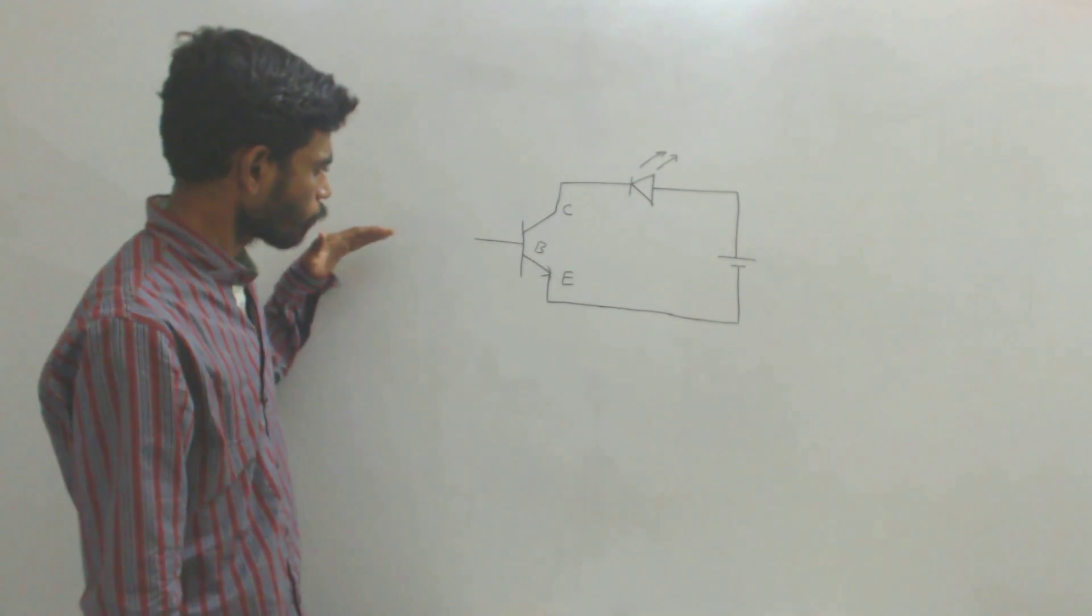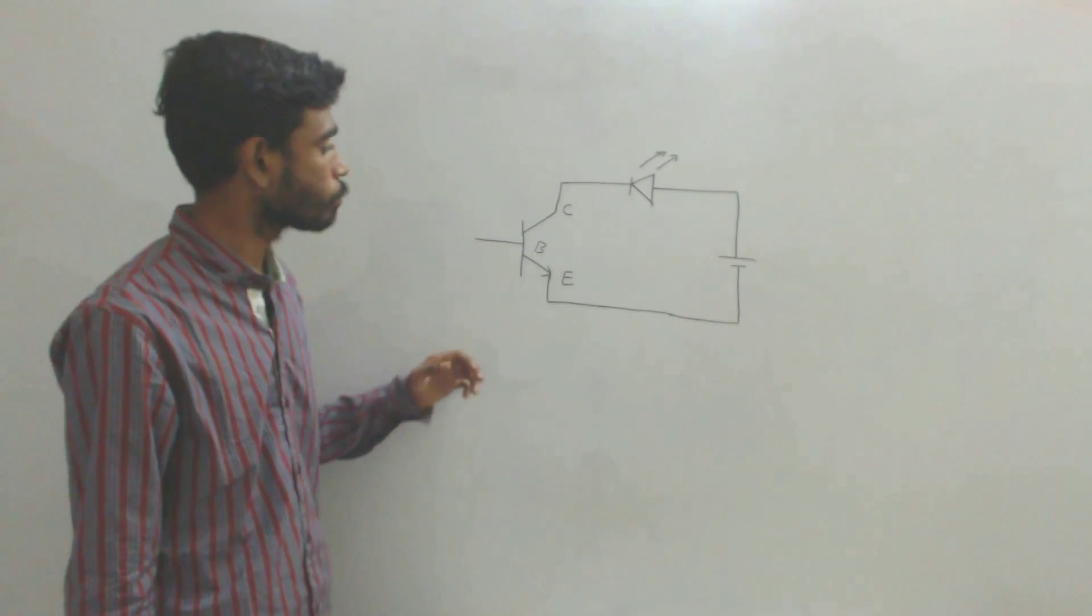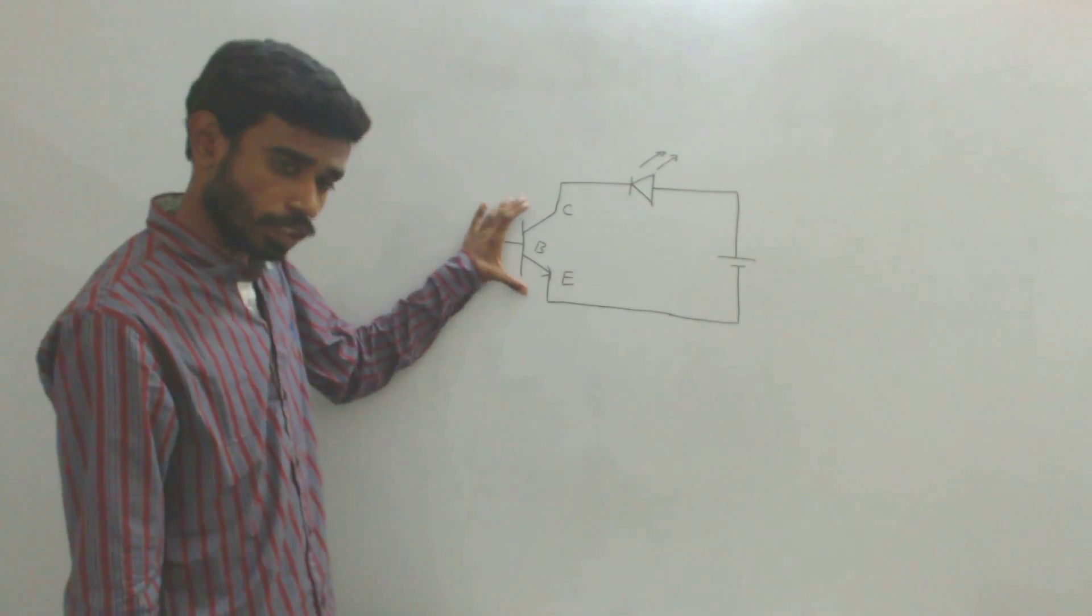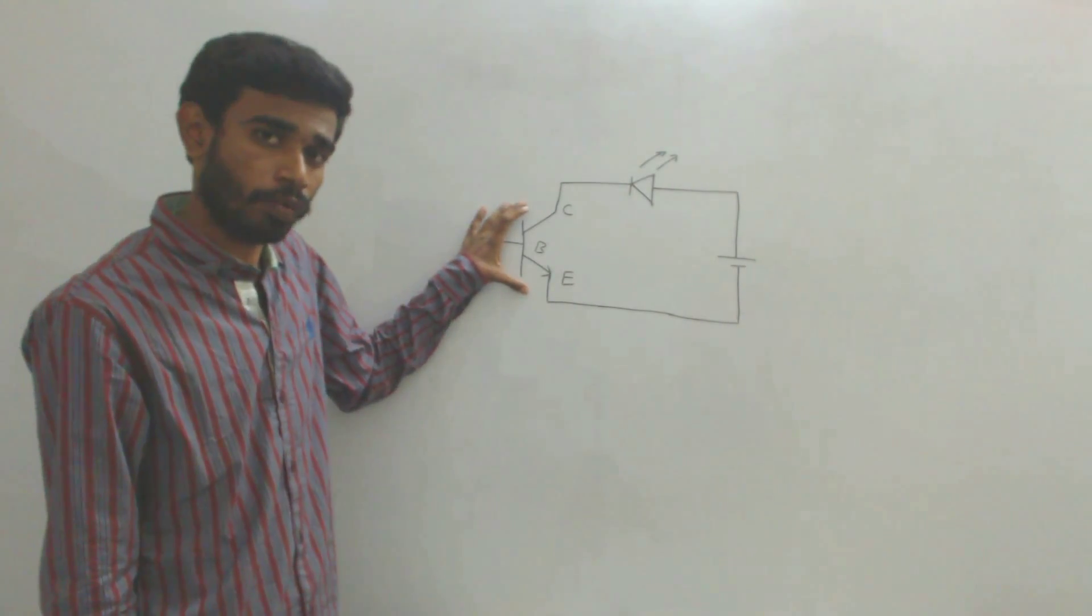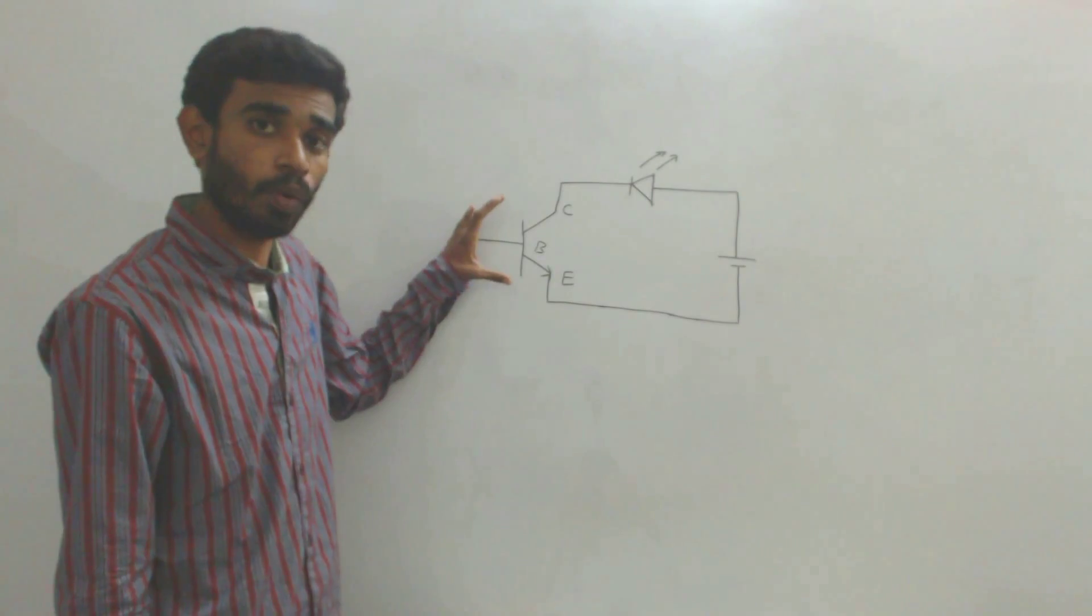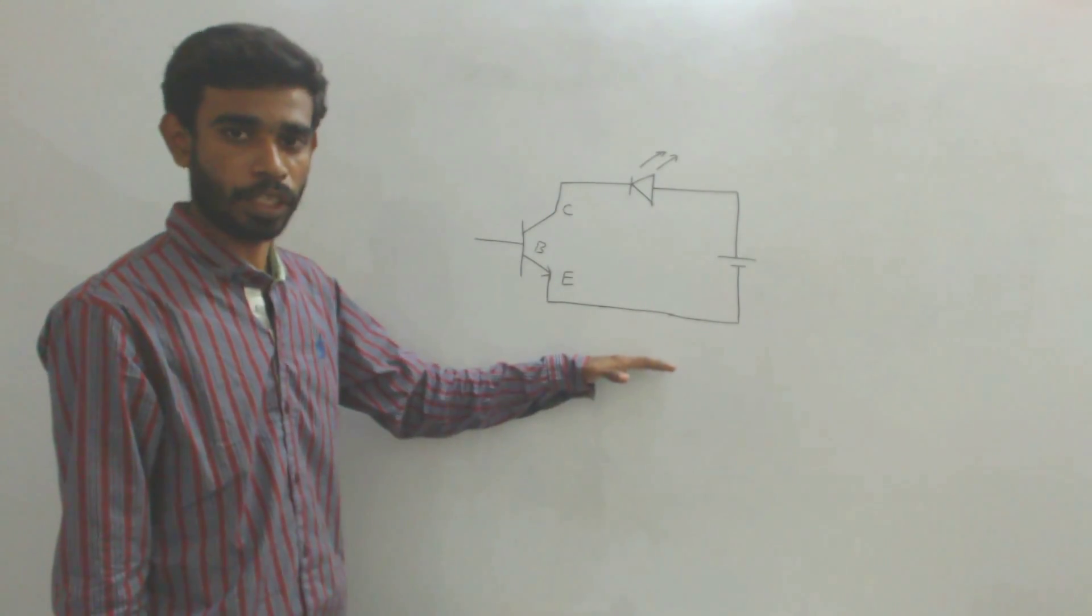If there is no base current through this transistor, the transistor will be in cutoff region and behaves as an open switch, and there will not be any current in the circuit.